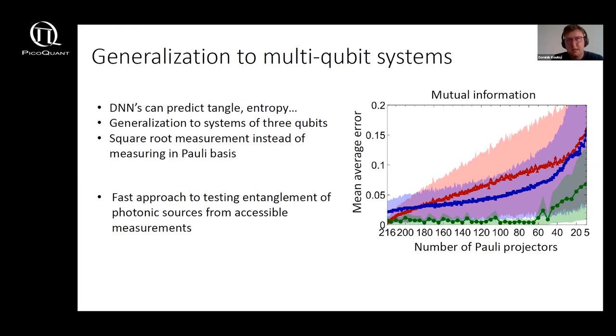But of course we are not bound only to predict just concurrence from incomplete measurements. We can predict other integral quantities of quantum states such as tangle or entropy or even mutual information which is probably a well-known correlation measure for people working in QKD. And this can nicely generalize, the mutual information can be generalized to systems of multiple qubits.